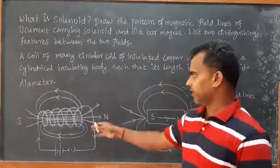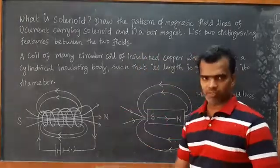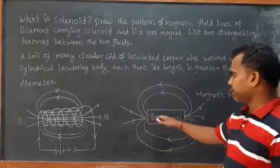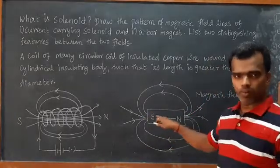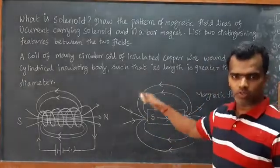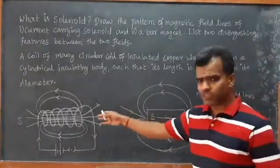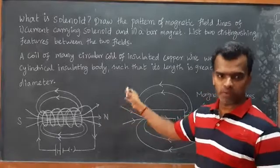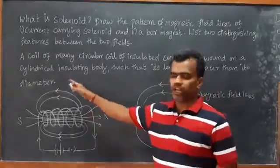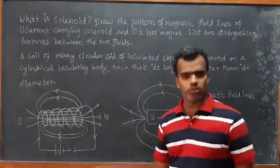This is a uniform magnetic field inside the solenoid. In the bar magnet's magnetic field, we have a uniform magnetic field inside. Outside, the field goes from north to south.